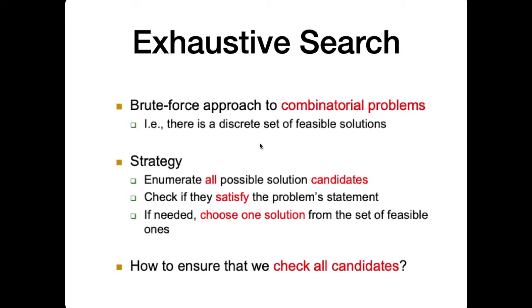For problems that are combinatorial in nature where the feasible solutions are discrete sets, for example graph problems, it's called exhaustive search. This strategy is synonymous with brute force: enumerate all possible solution candidates or outputs.